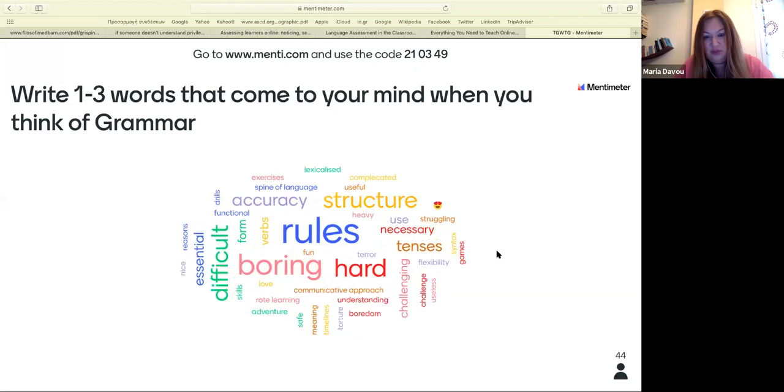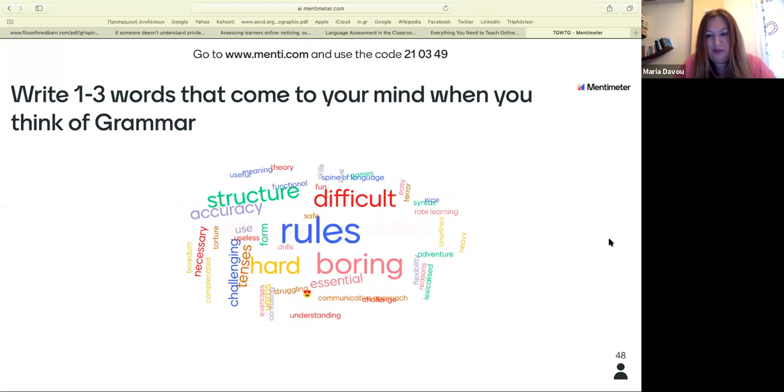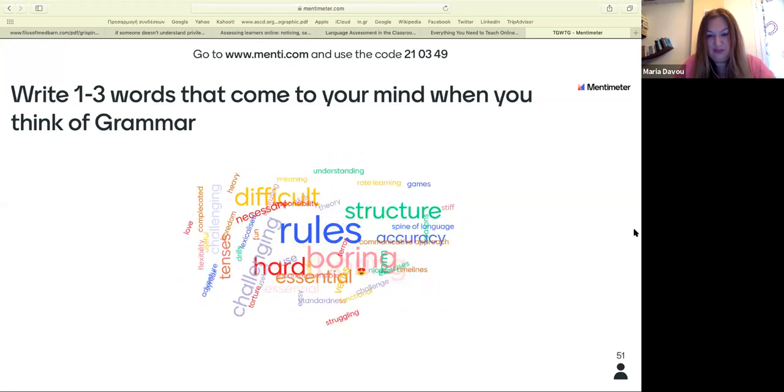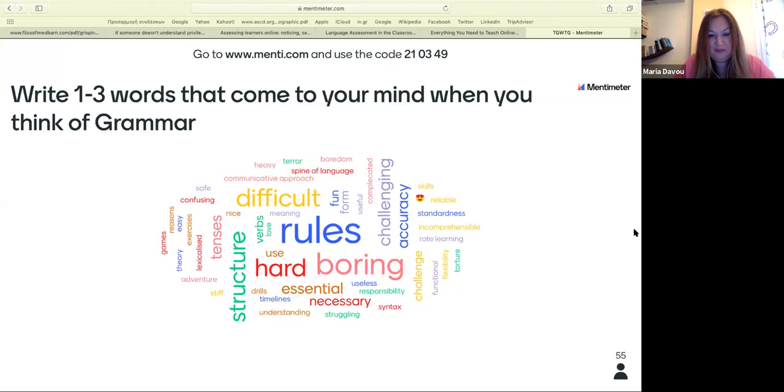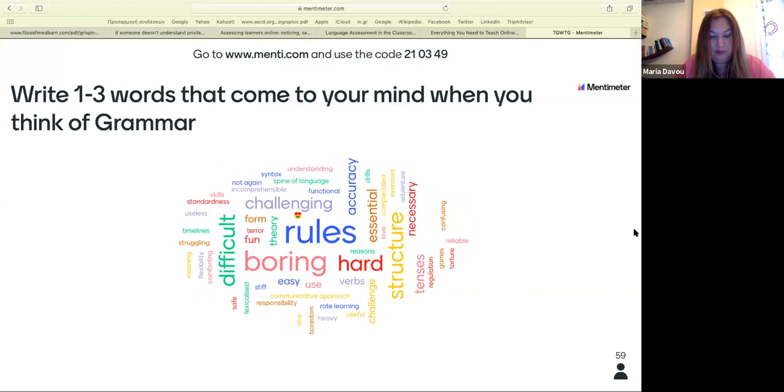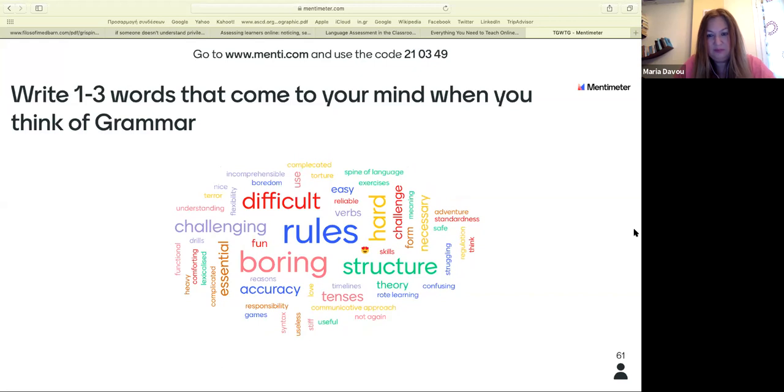And structure and essential, challenge, accuracy, rote learning, hard, boring is big. Rules and boring are getting bigger and bigger. Torture - somebody wrote torture. Hard, difficult. Nobody wrote easy. But some people like it because we like challenges. But look at the big words and how the word cloud changes. Rules, hard, difficult, boring, structure, necessary, tenses of course. Grammar is all about tenses, right?